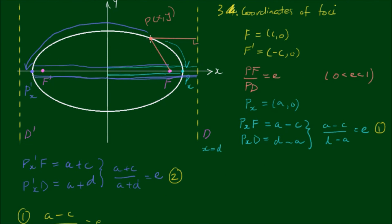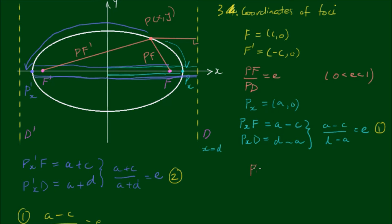One more point to note: the distance from point p to its nearest focus (pf) plus the distance from point p to its far focus (pf') is always equal to twice the semi-major axis length, 2a. The length 2a, from x-intercept to x-intercept, is called the major axis. The length 2b, from y-intercept to y-intercept, is called the minor axis.